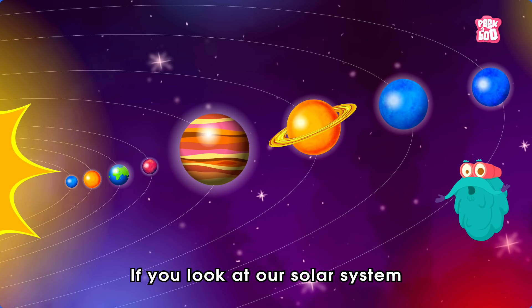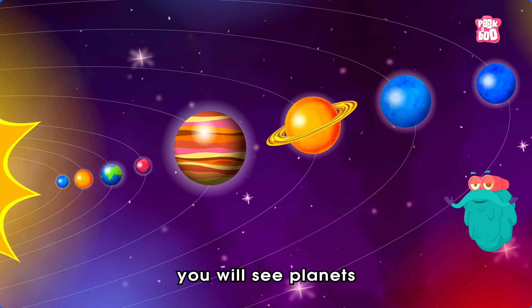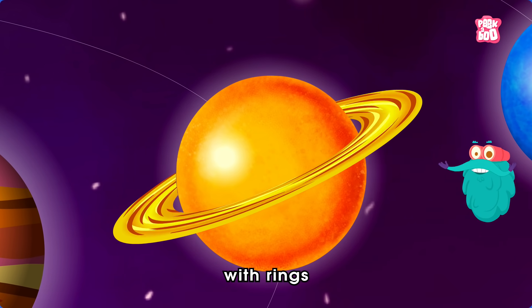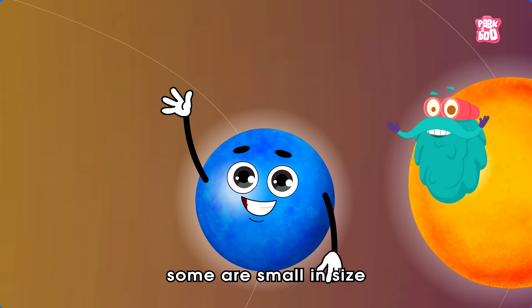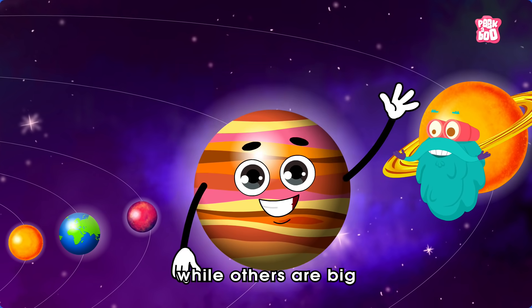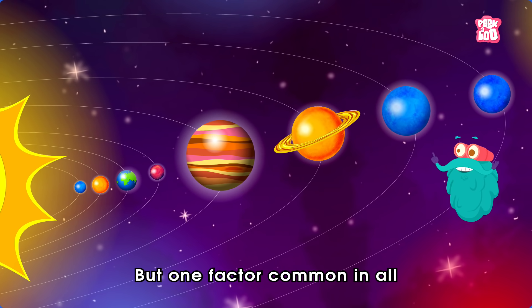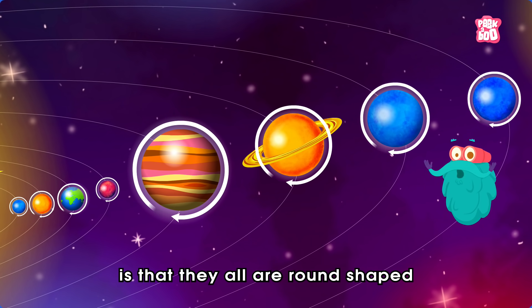If you look at our solar system, you will see planets made of rocks, gas with rings, without them, some are small in size, while others are big.